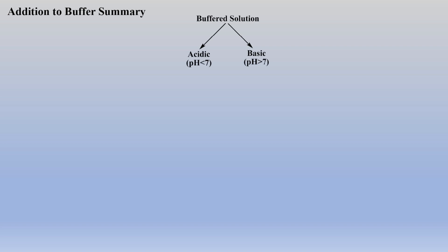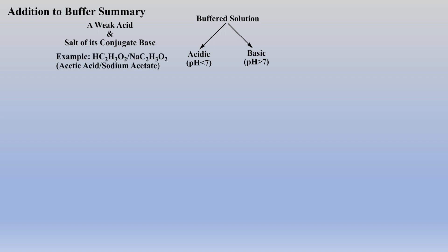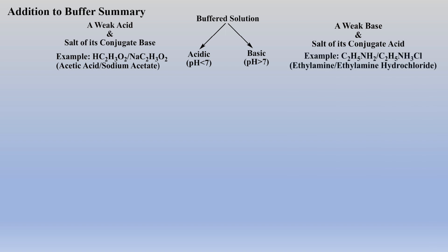We will now summarize the possible calculations that may arise when one adds acid or base to acidic or basic buffered solutions. Remember, an acidic buffered solution is created when a weak acid and the salt of its conjugate base are both in solution, and a basic buffered solution is created when a weak base and the salt of its conjugate acid are both in solution. Thus, you will be asked to calculate final pHs after either acid or base is added to these buffered solutions. In this summary, we will overview the concepts to solve these four types of exercises.